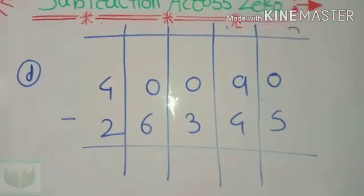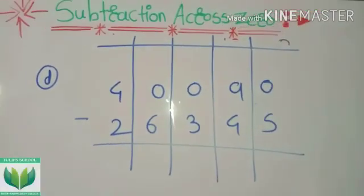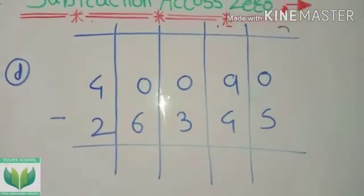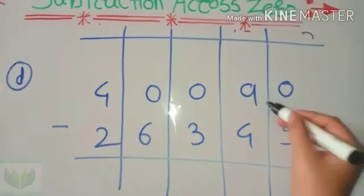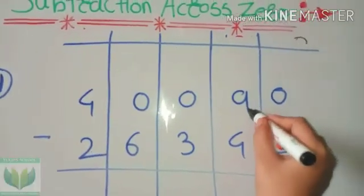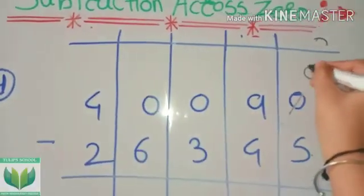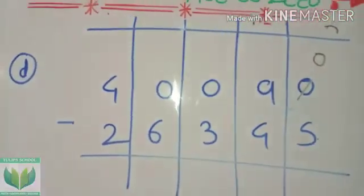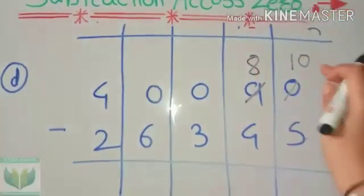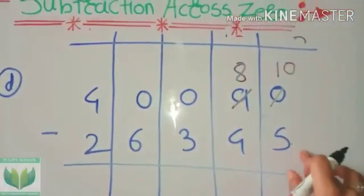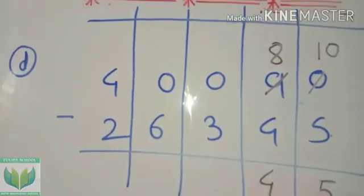I wrote the example 40,019 minus 26,345. Now we have to do subtraction. 0 minus 5 is not going, so we have to take 1 from the 9. Here becomes 10 and 9 becomes 8. 10 minus 5 is 5, and 8 minus 4 is 4.